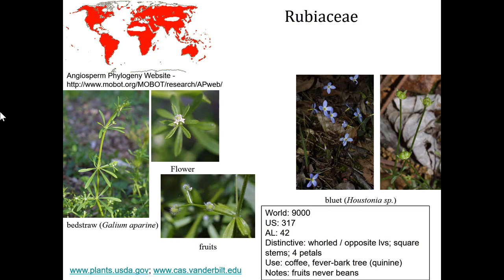These plants tend to have whorled or opposite leaves. One local example is Galium, or bedstraw, which has whorled leaves. Many of these plants have four petals on the flowers, glandular trichomes, and very prominent stipules or stipule scars. Some pretty useful plants belong to this group — coffee, for example, one of the most important agricultural crops in the world, and also the fever bark tree, which produces quinine, a medicinal compound that protects people from malaria and may possibly help against COVID-19.